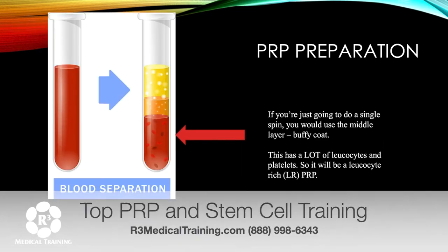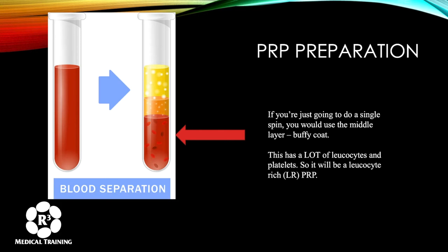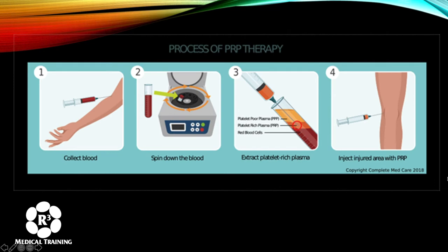If you're just going to do a single spin, you would use the middle buffy coat layer, which has a lot of leukocytes — white blood cells — and platelets. Using just this middle layer from a single spin gives you leukocyte-rich PRP. The process is: collect the blood, put it in the kit, centrifuge it, then aspirate out the buffy coat, minimizing the amount of red blood cells while keeping some plasma — that's just fine.